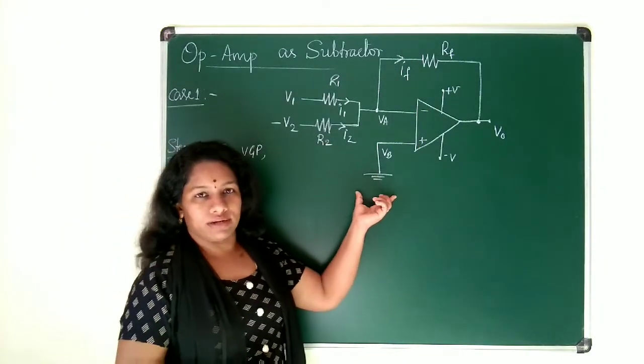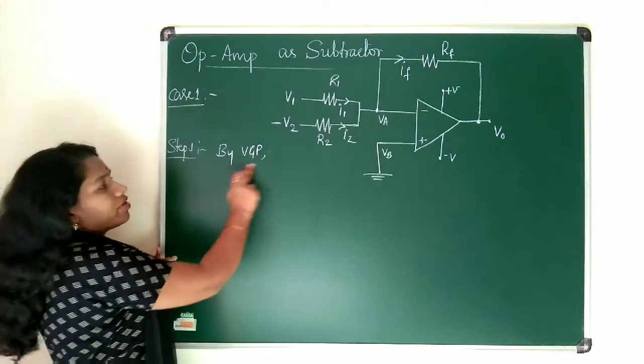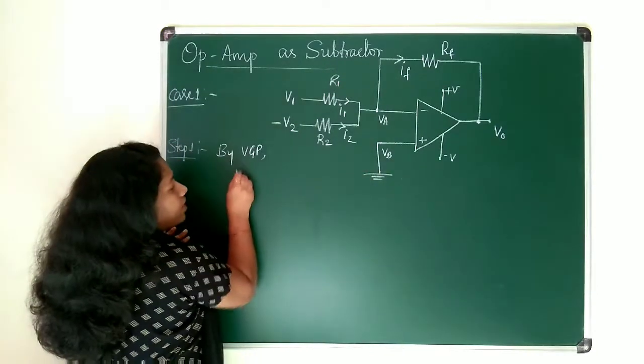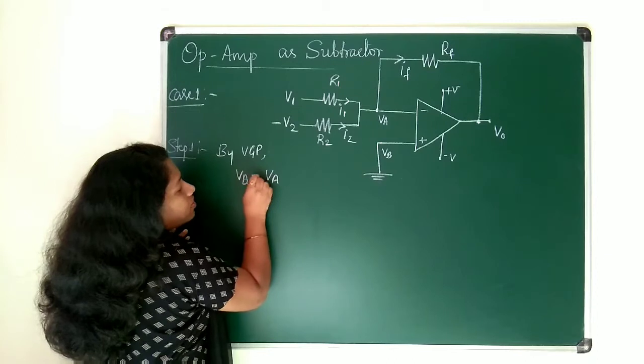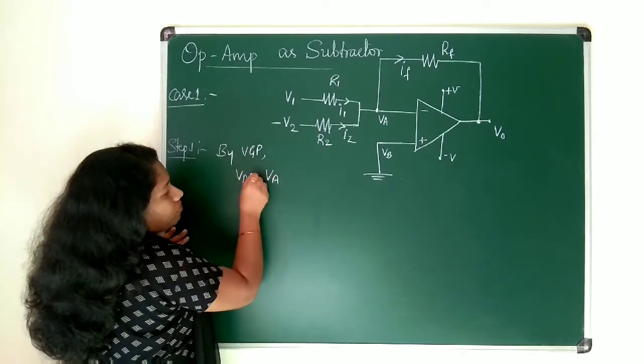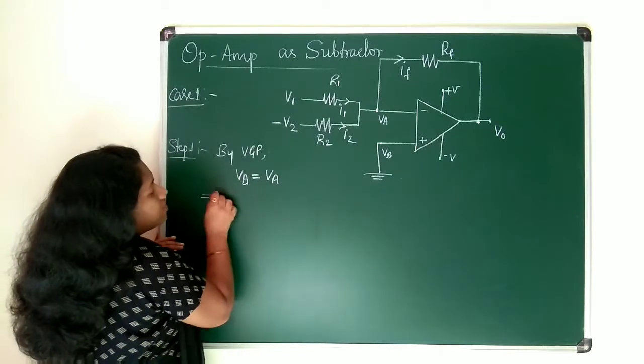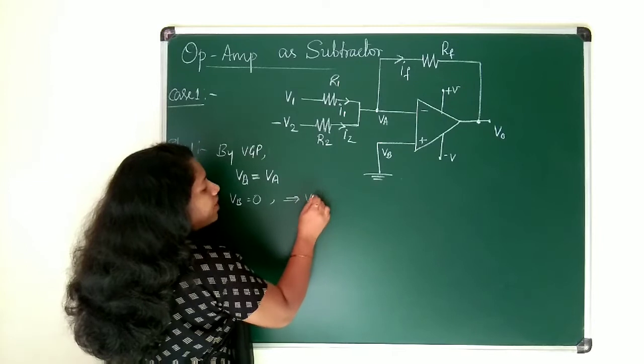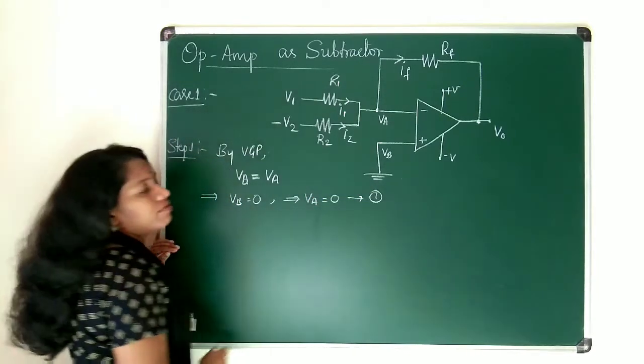This is all about the circuit construction. Now let us analyze this circuit. Here by virtual ground property what I can say VB is equal to VA. What is your VA? VB is equal to 0. Since VB is equal to 0 I can write in turn VA is also equal to 0. This is what my first condition, first equation.